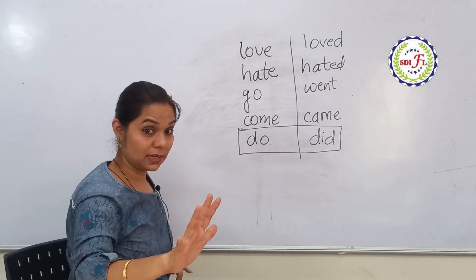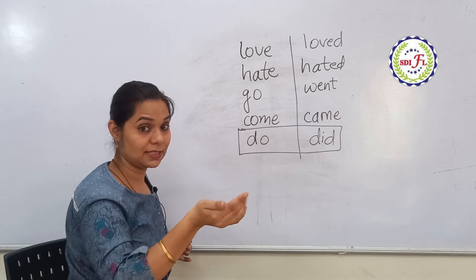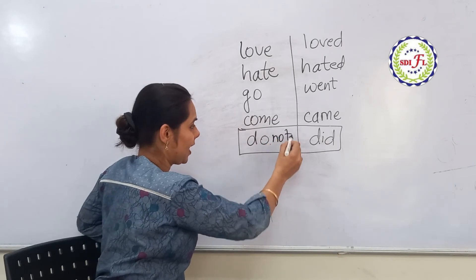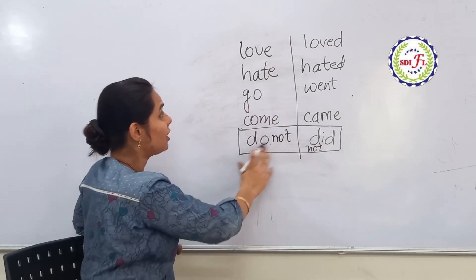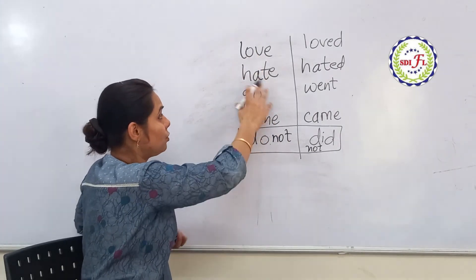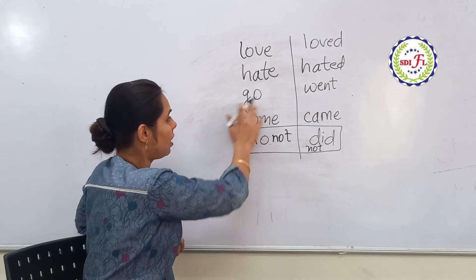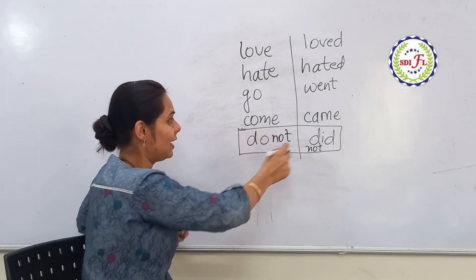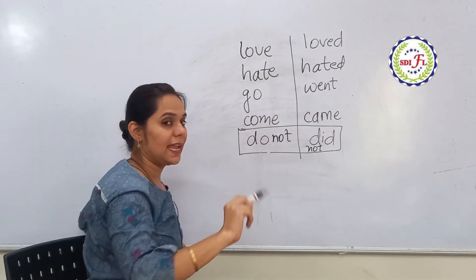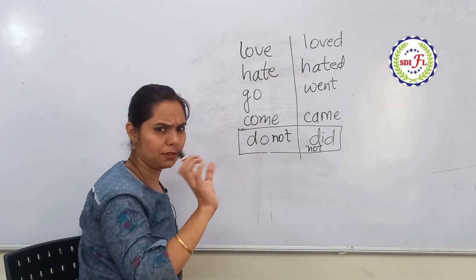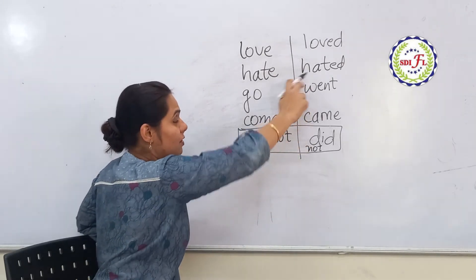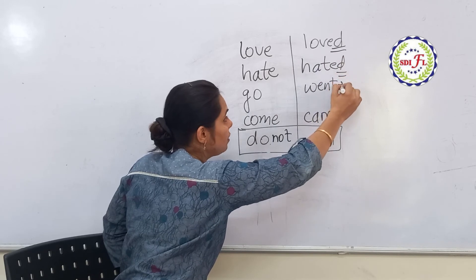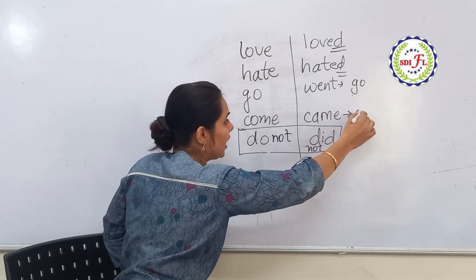Once this is done, we will start making negative sentences. I do not love bananas. I do not hate mangoes. I do not go to school. Then for past: I did not love his dress. The moment you use 'did not,' went will again become go, and came will again become come.